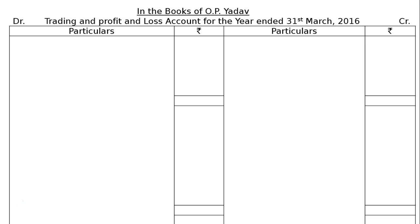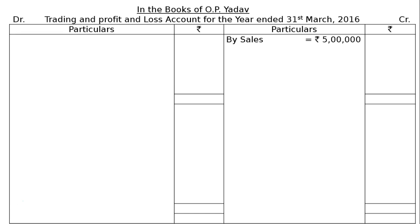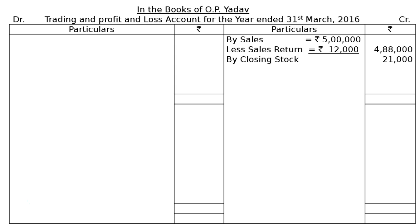First, start from the credit side of the trading account and write down: by sales Rs. 5 lakhs. And after that, sales returns Rs. 12,000. In the final column, write down the net sales — sales less sales returns — that is Rs. 4 lakhs 88,000. And the next one being by closing stock Rs. 21,000.